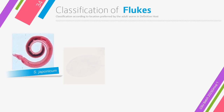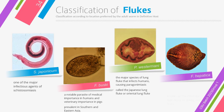Schistosoma japonicum is one of the major infectious agents of schistosomiasis. Fasciolopsis buski is a notable parasite of medical importance in humans and veterinary importance in pigs, and they are prevalent in southern and eastern Asia. Paragonimus westermani, which is a lung fluke, is a major species of lung flukes that infects humans, also called Japanese lung fluke or oriental lung fluke. Fasciola hepatica, which is a liver fluke, is known as the sheep liver fluke.